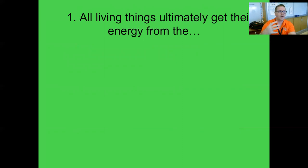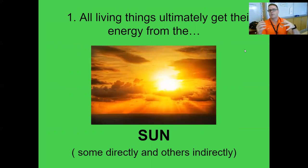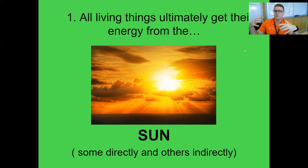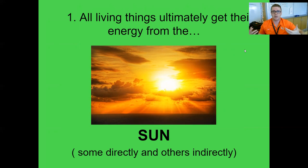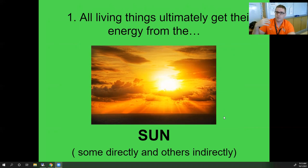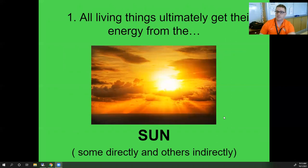When we talk about energy flow and how things get their food, we need to recognize that all living things ultimately get their energy from the sun, either directly or indirectly. I'm not a plant — I can't do photosynthesis. Plants can do photosynthesis because they have chlorophyll in their cells that allows them to take sunlight, run chemical reactions, make their own food, and produce oxygen for us to use to survive.